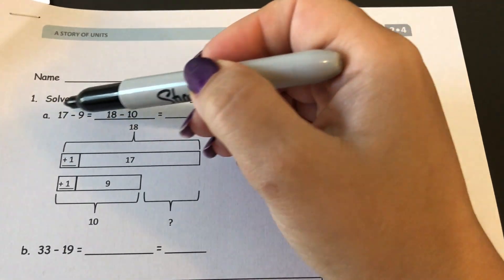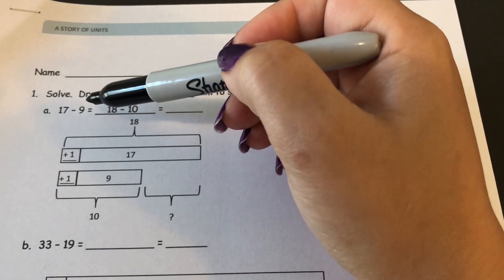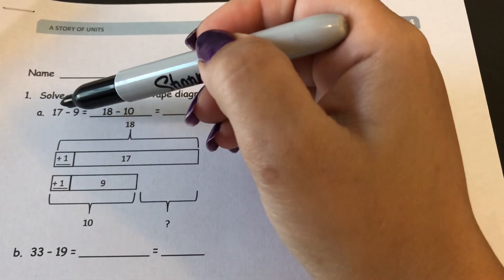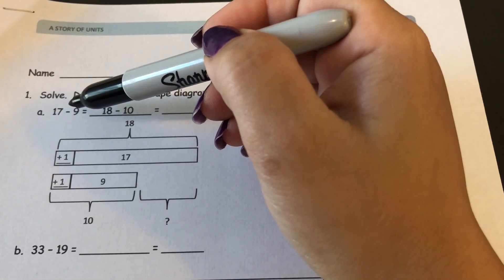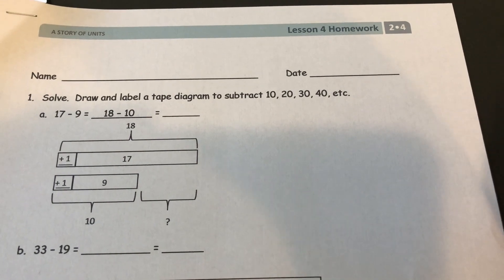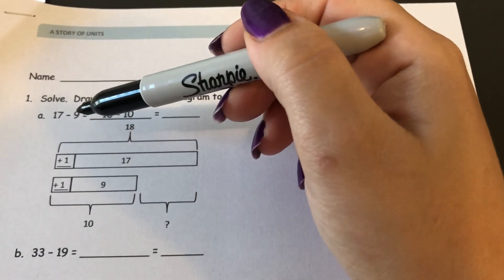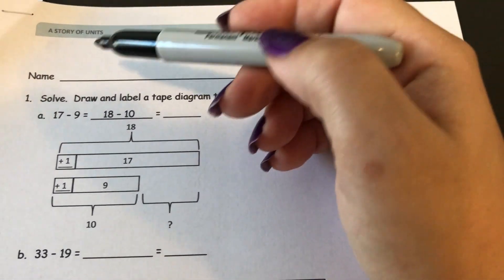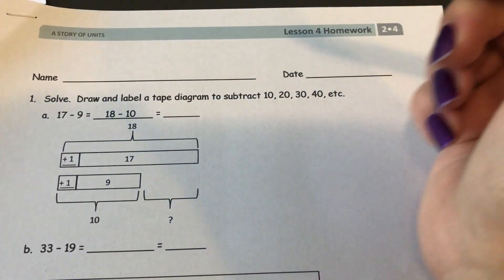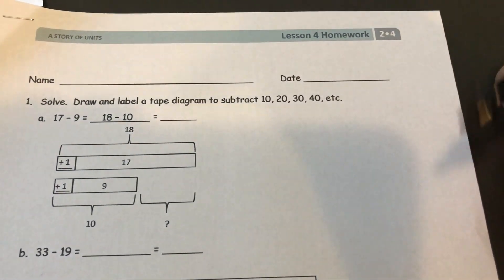So the first problem is 17 minus 9, and if you go to subtract like units, you would have 7 ones and you'd need to take away 9 ones, which we can't do because there's not enough ones in 7 ones to take away 9. So instead of decomposing the 1 ten into 10 ones, we're going to practice a different strategy.